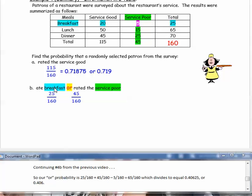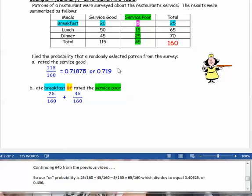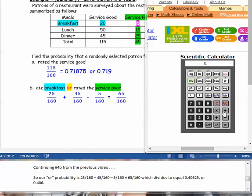Continuing number 4b from part one of this video, we were just about to do our OR probability, which is adding the probabilities and then subtracting the overlap. So we're adding the breakfast probability plus the probability that they rated the service as poor, and then subtracting the overlap which was the five people that fit both categories. So five out of 160 gives us 25 plus 45 minus 5, which would be 65 out of 160.